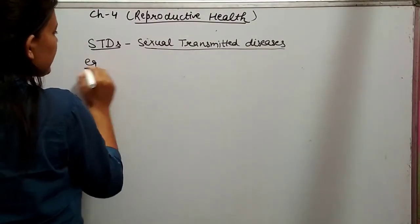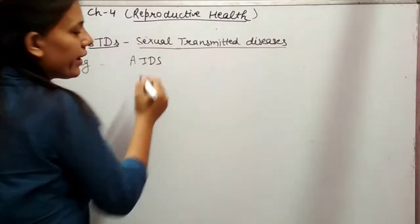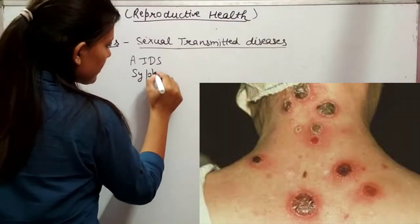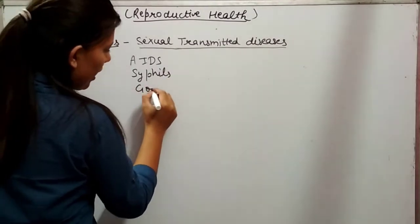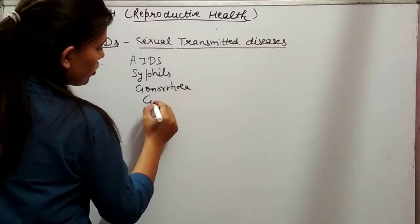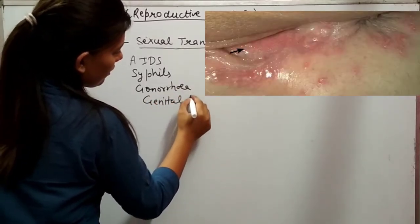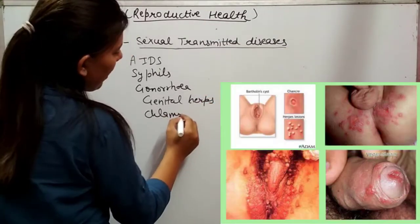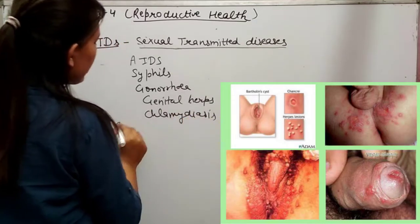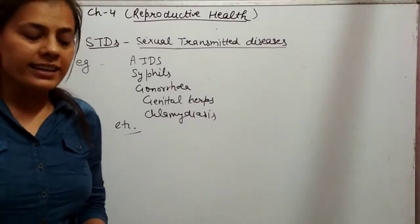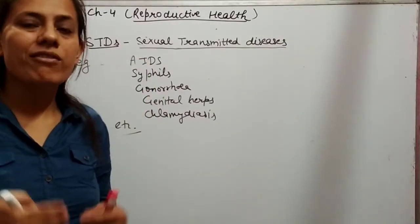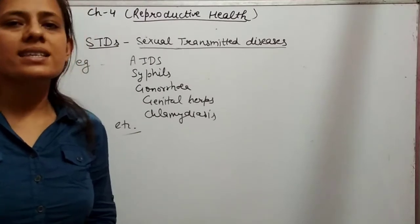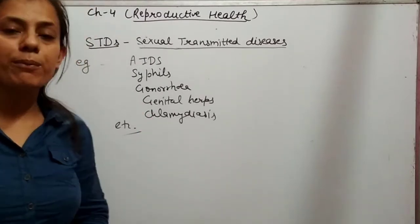What are some examples of STDs? AIDS — acquired immunodeficiency syndrome — is a very common STD. Others include syphilis, gonorrhea, genital herpes, and chlamydia. These are some examples of STDs. They may be caused by viruses, bacteria, nematodes, or fungi — any disease-causing agent may be responsible for different types of STDs.